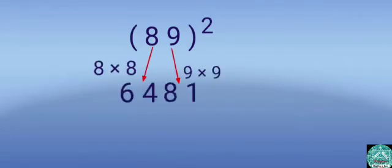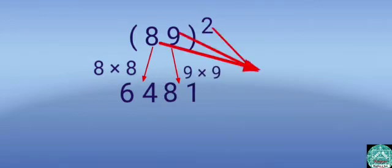Find the square of 89. 8 squared equals 64. 9 squared equals 81. Now multiply 8 by 9 by 2. 8 times 9 times 2 equals 144.